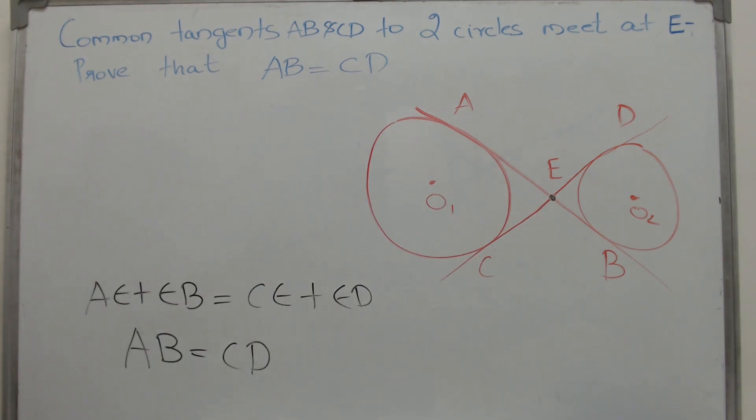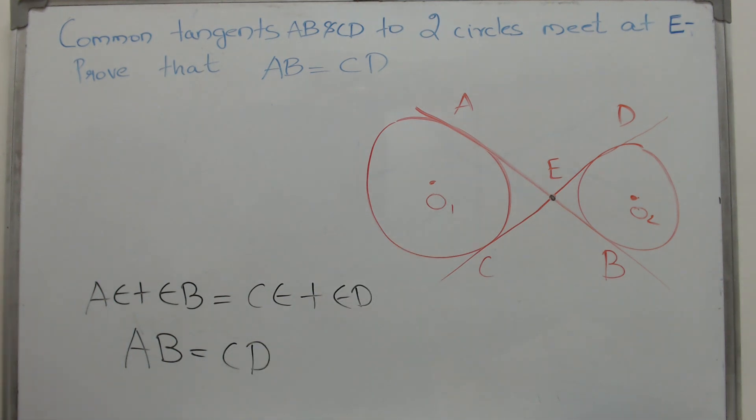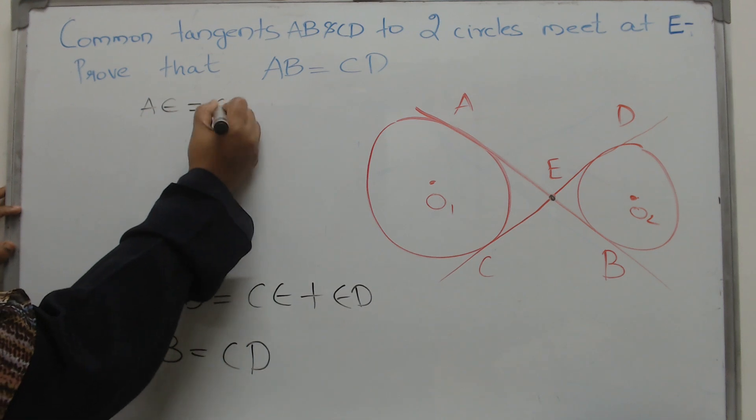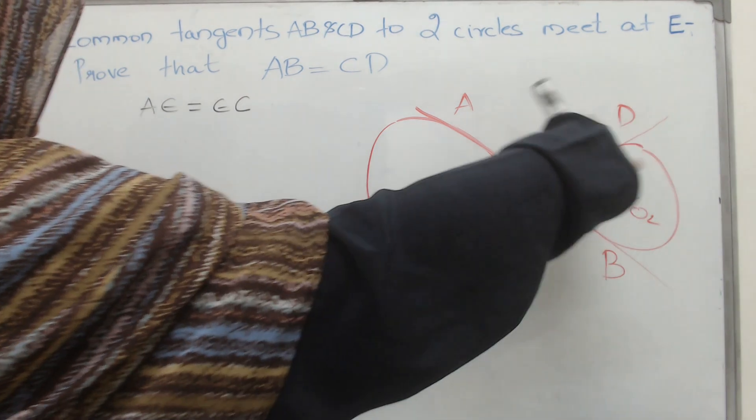Now from that external point EA and EC are tangents to the same circle which means what? AE is equal to EC. Similarly, look at this portion here.